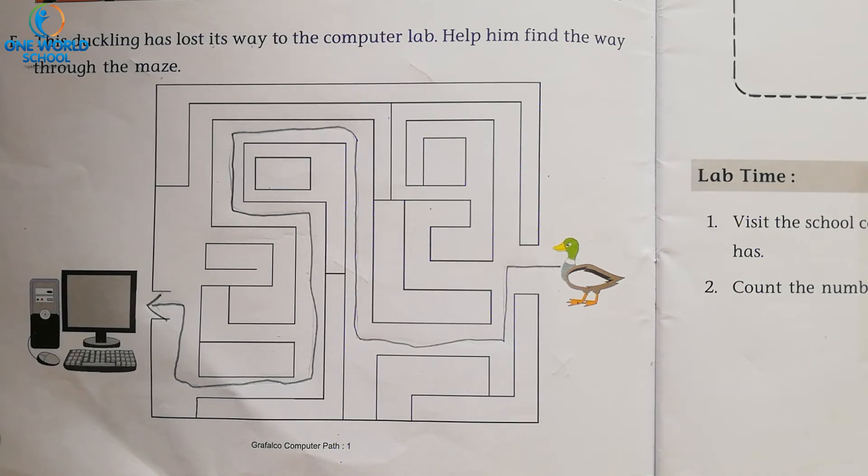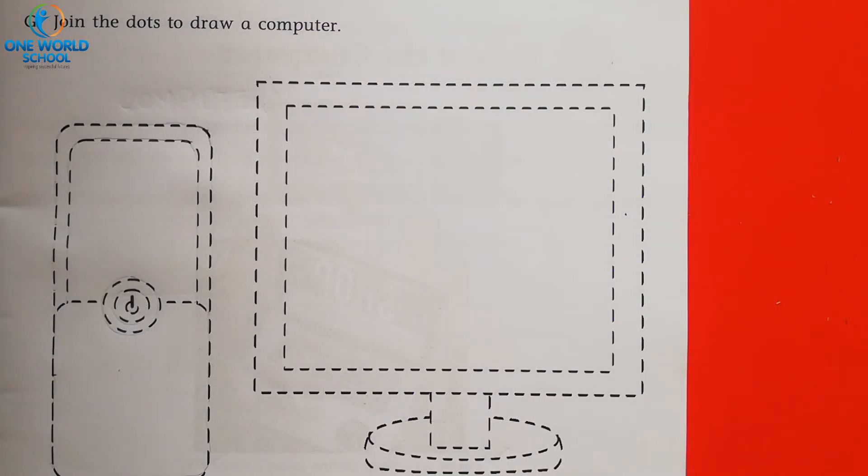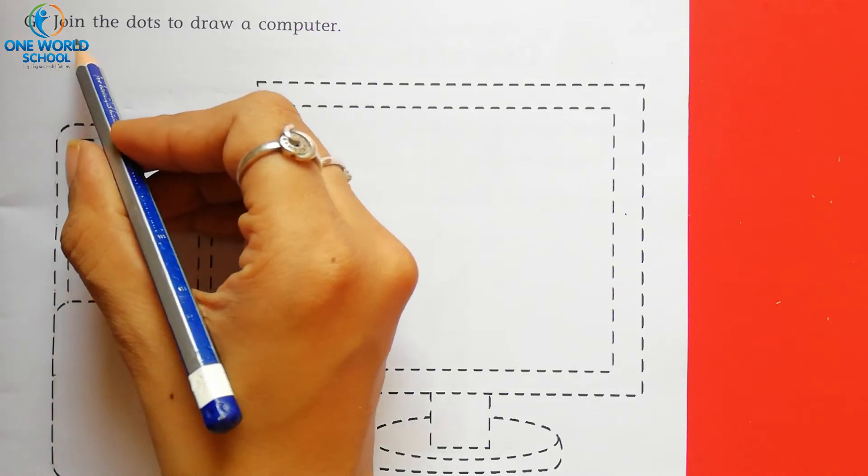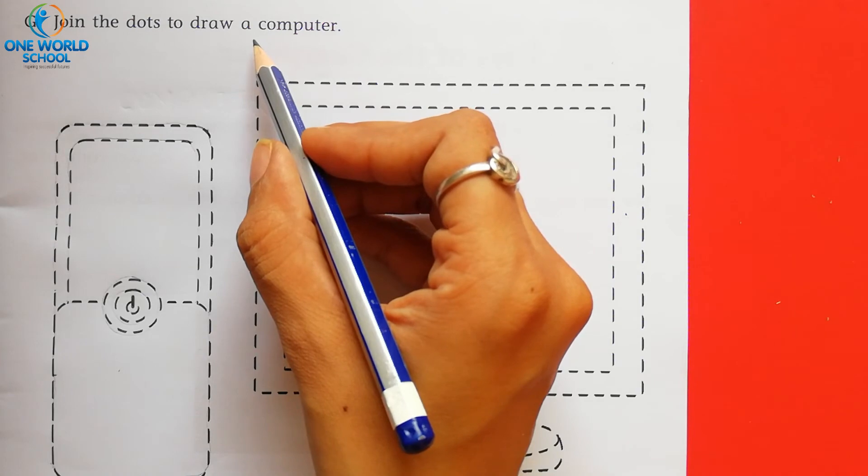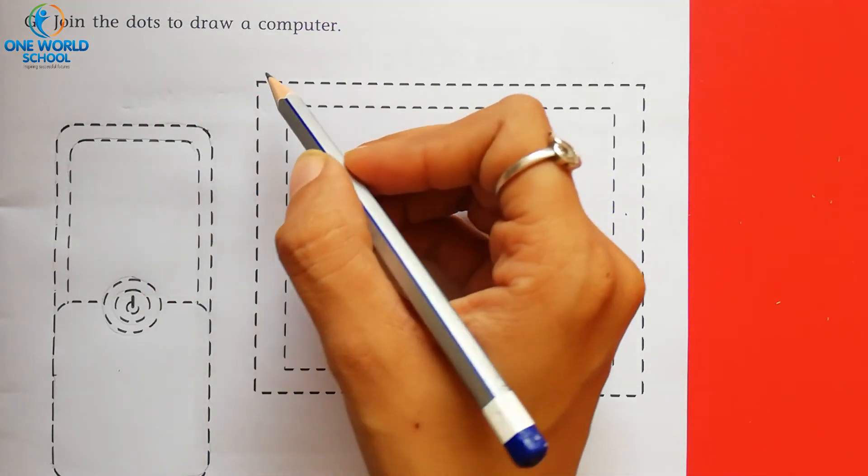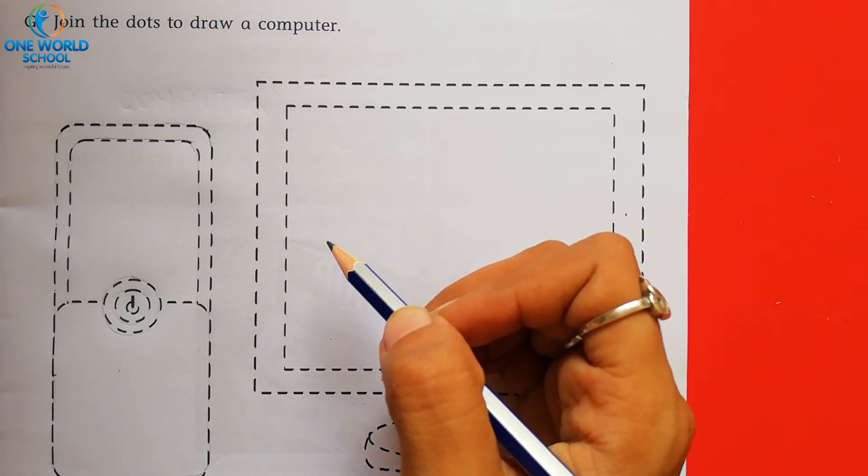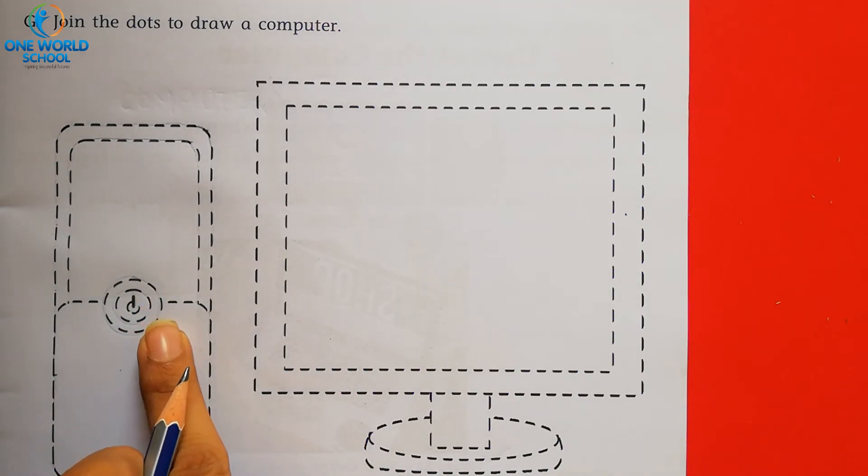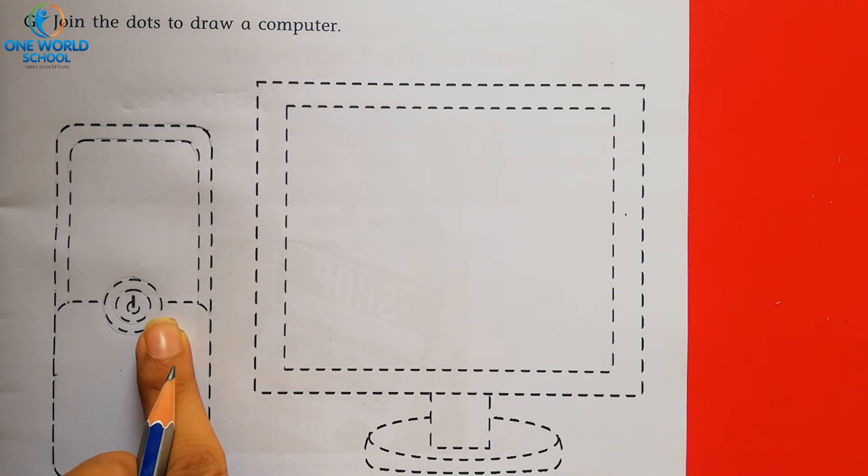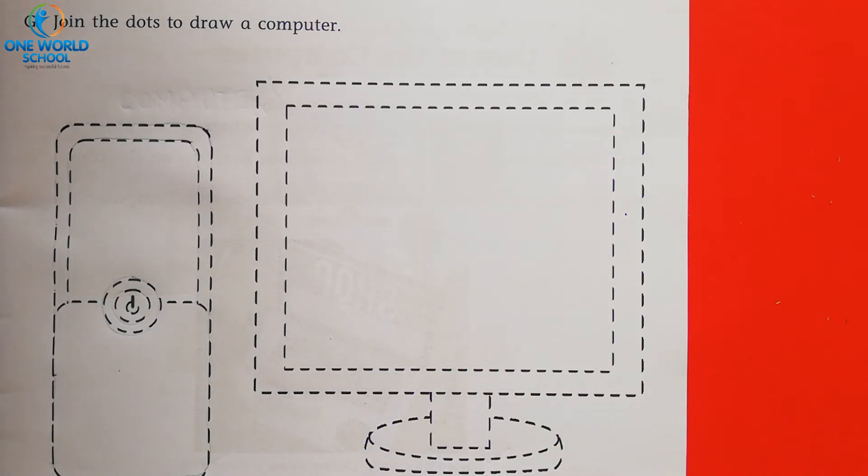Now come on the next page. Page no. 9. Now this is the last activity. Question no. G. Join the dots to draw a computer. Computer को draw करने के लिए. आप को क्या करने पड़ेंगे. This is computer नहीं है. This is computer के parts है. What is this? This is CPU. And what is this? This is monitor.